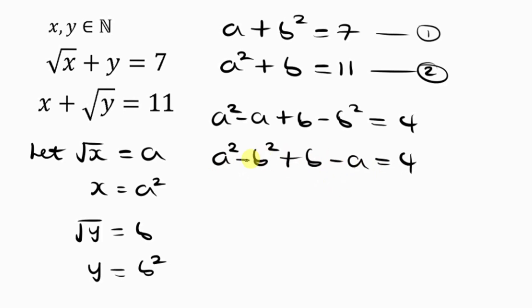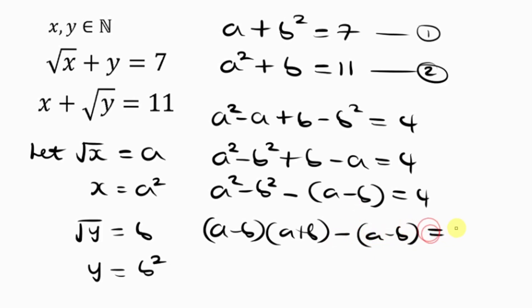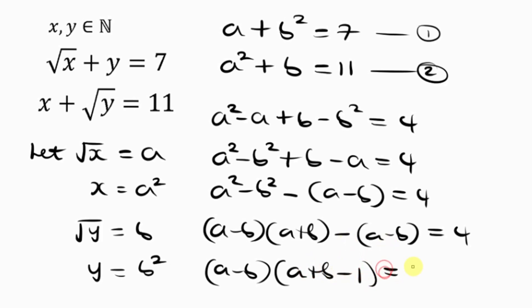Let's arrange this expression so it can be easily factorized. We rewrite it as: a squared minus b squared, minus a minus b, equals 4. Notice that a squared minus b squared is a difference of two squares, which factors as a minus b times a plus b. Now a minus b is also common in the second term, so factoring out a minus b gives: a minus b times a plus b minus 1, equals 4.